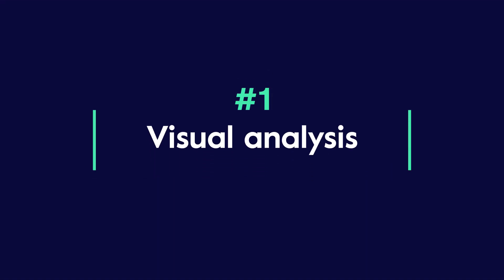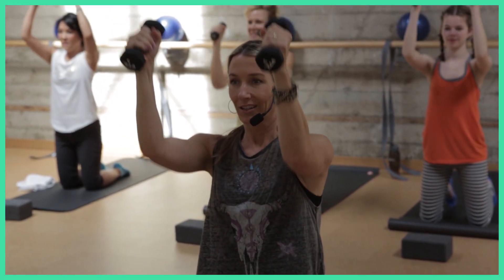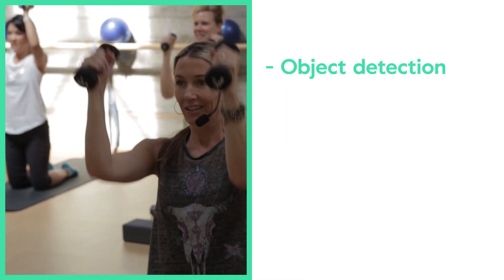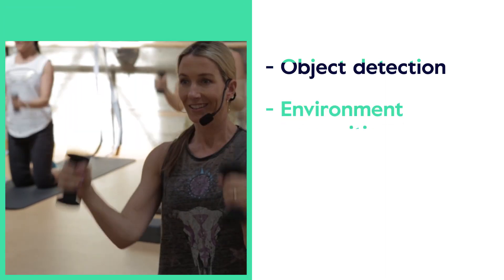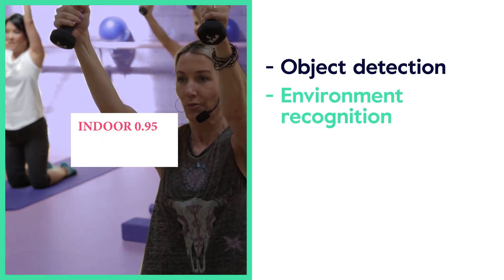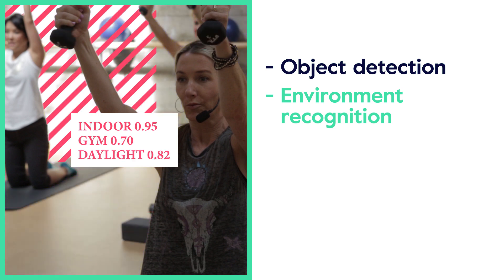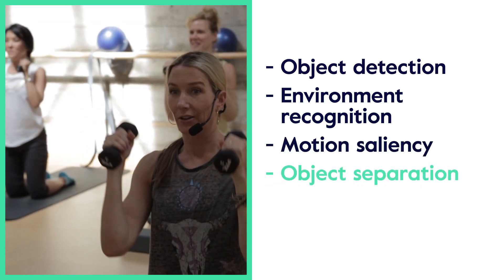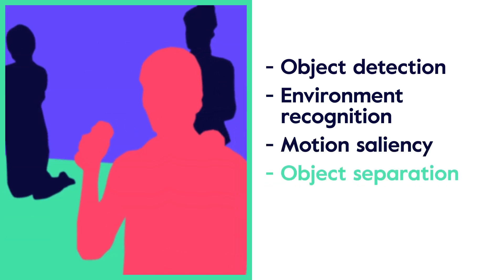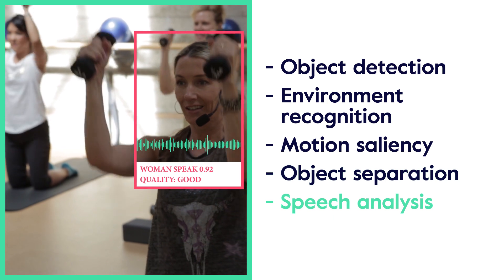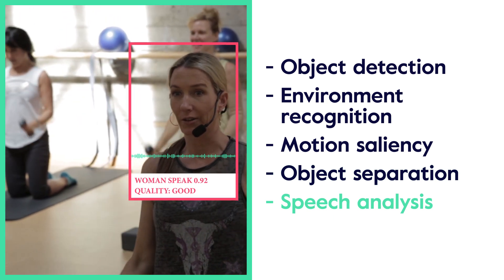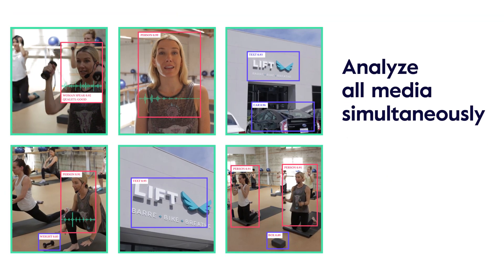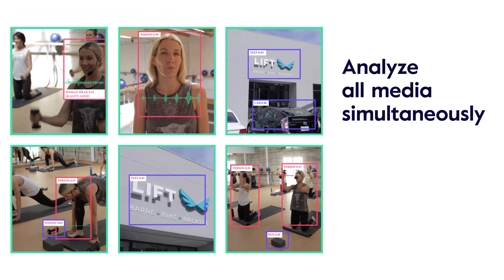The first step is visual analysis. Magisto conducts in-depth analysis of each and every frame. For example, our smart technology detects important objects, recognizes the surrounding environment, tracks salient motions in the clips, separates foreground objects from the background, analyzes essential speech and its sound attributes, and much more. Our highly optimized cloud-based platform allows us to analyze all media simultaneously.